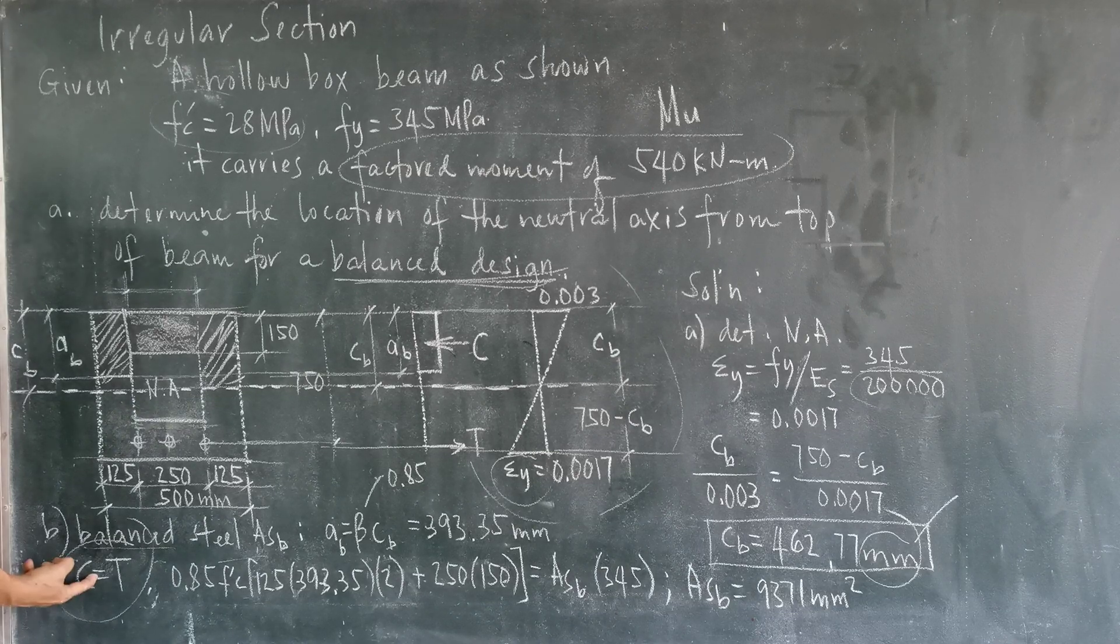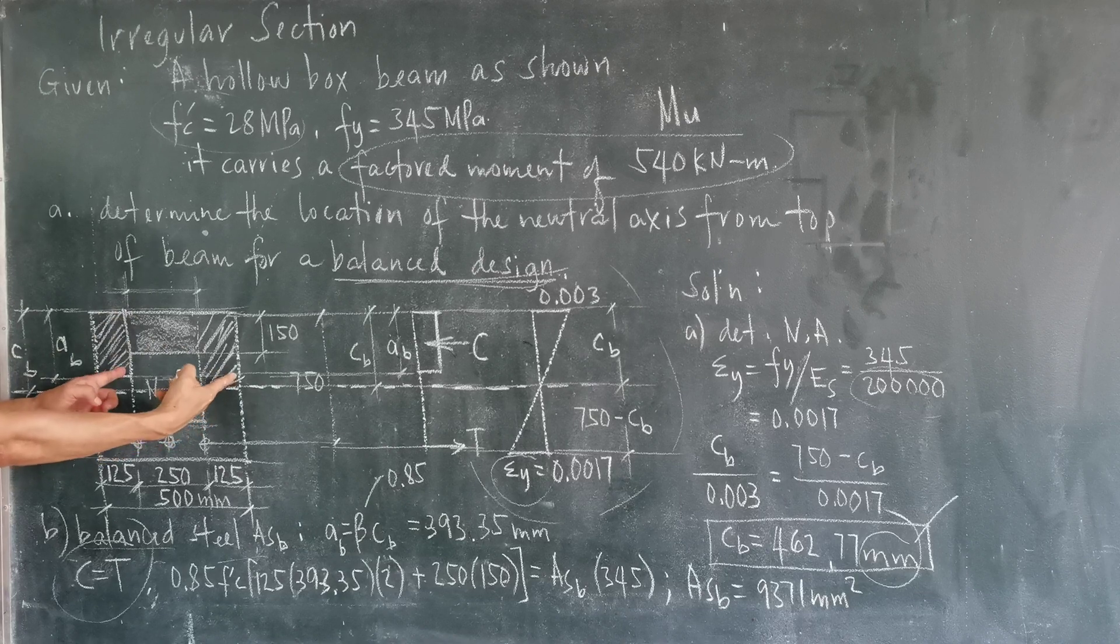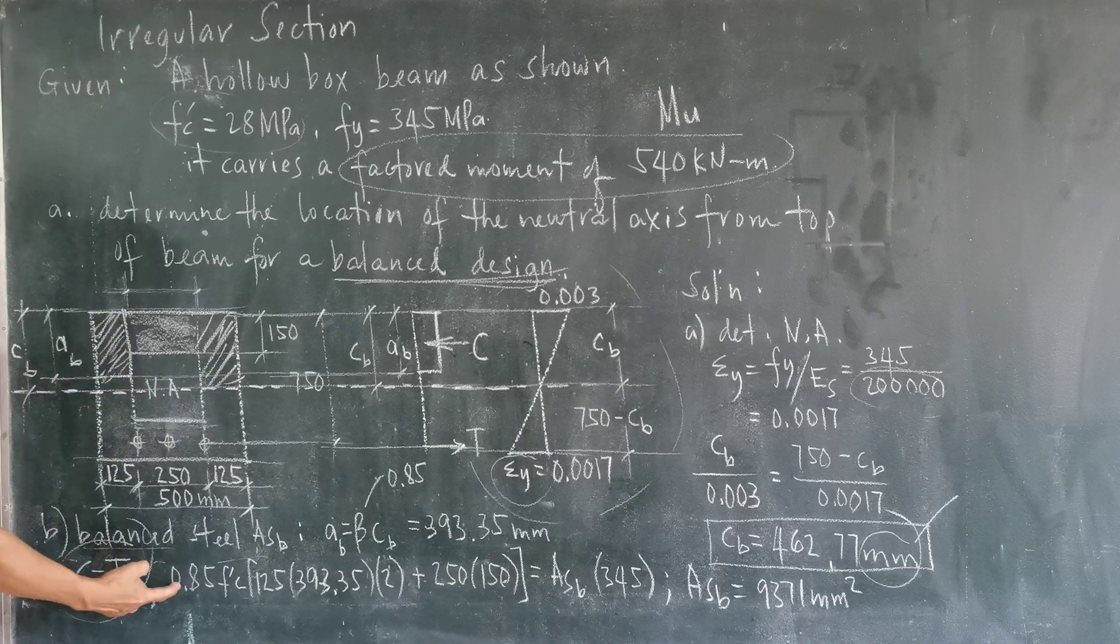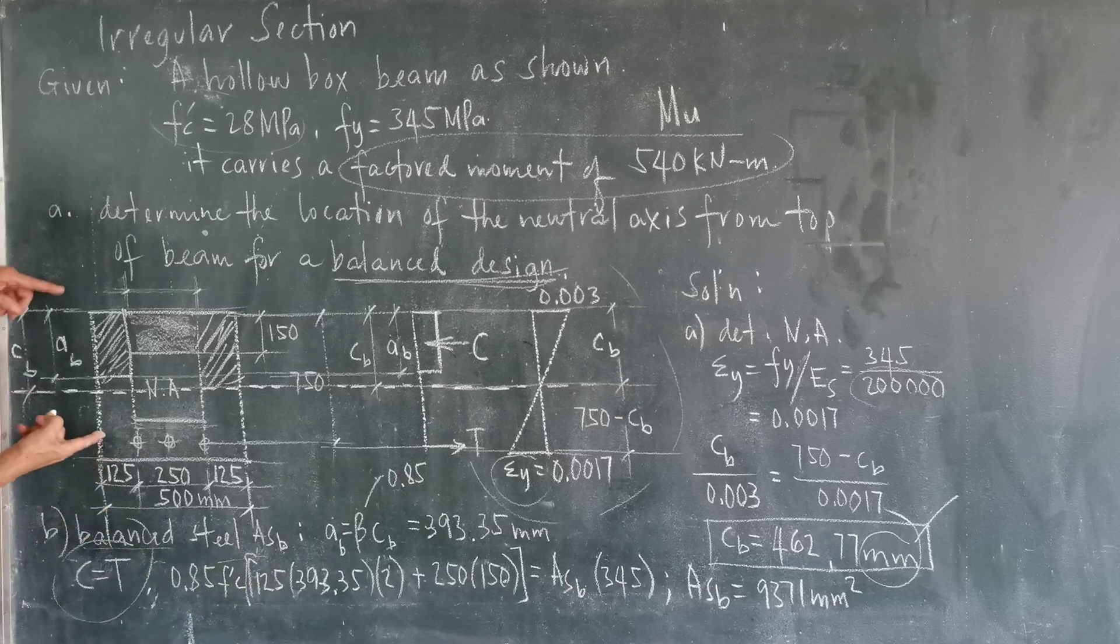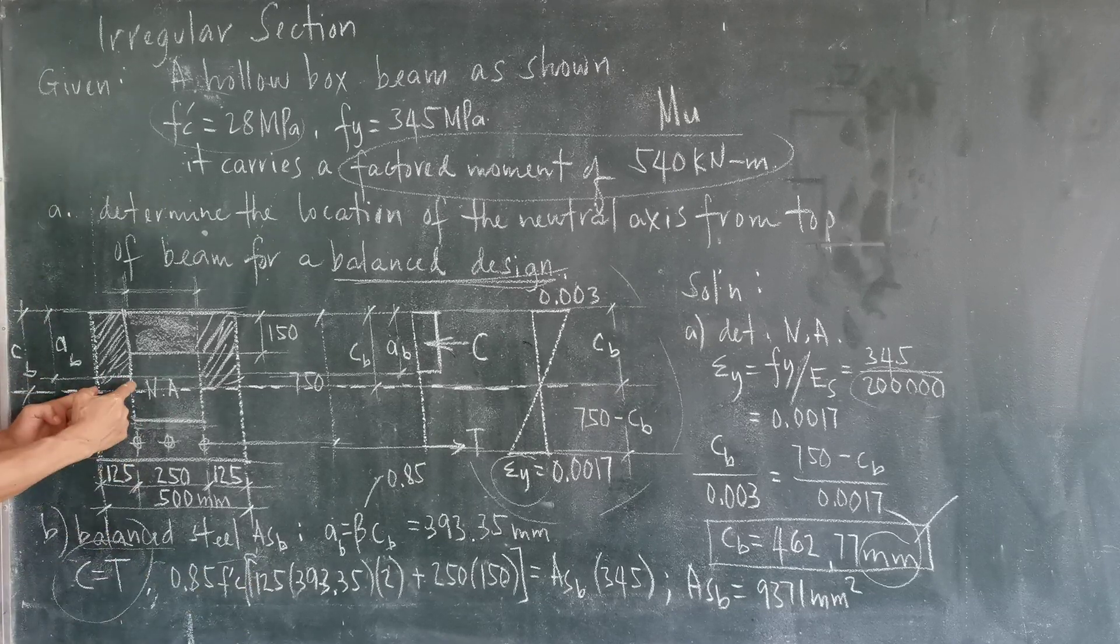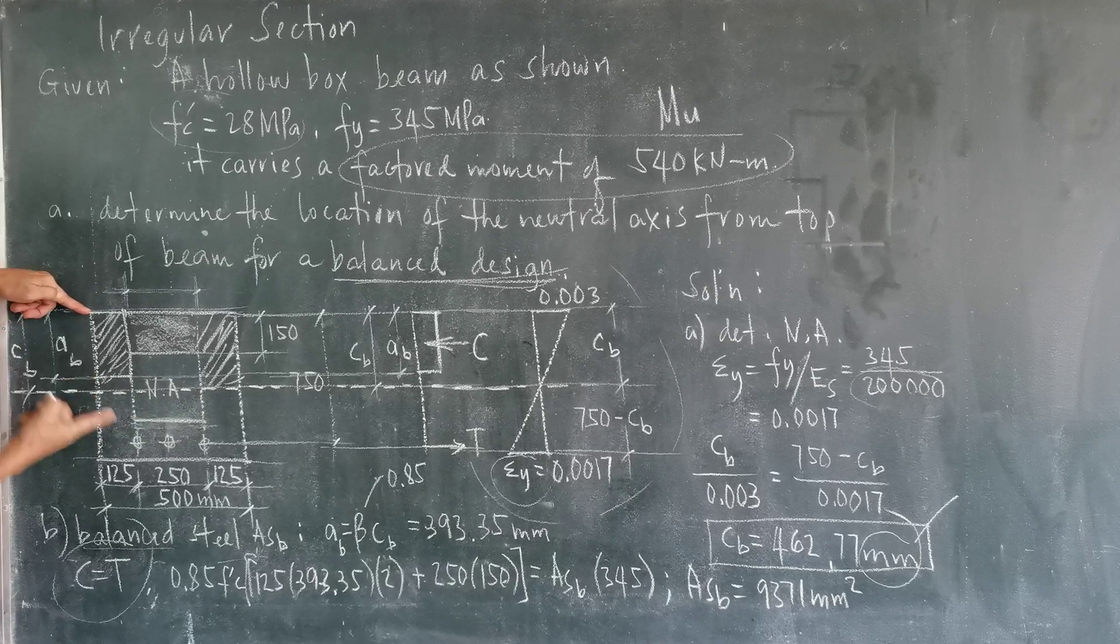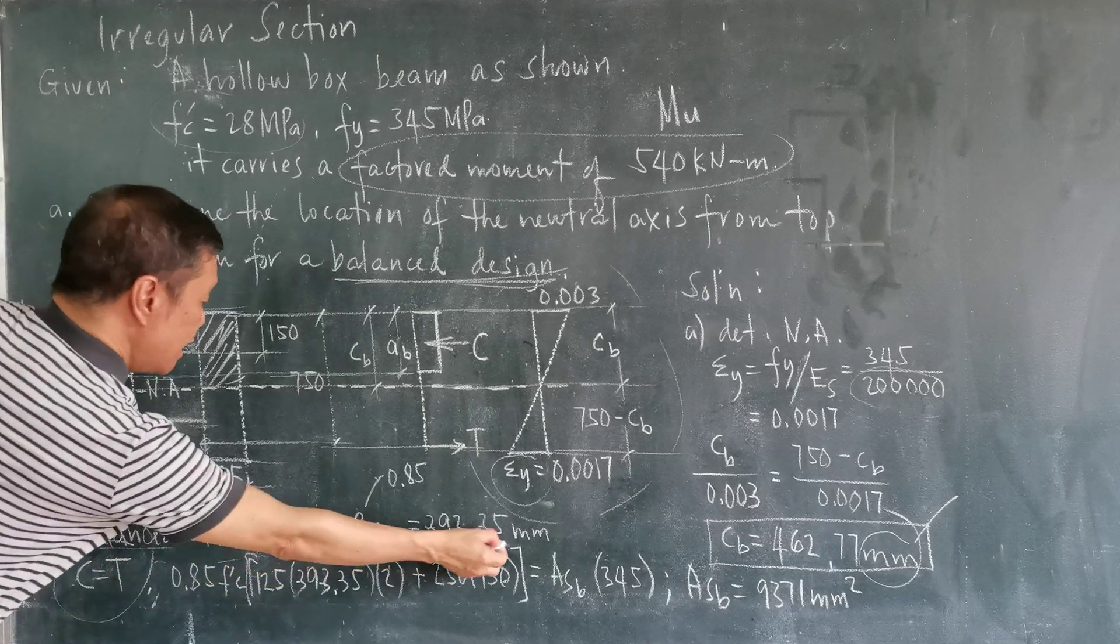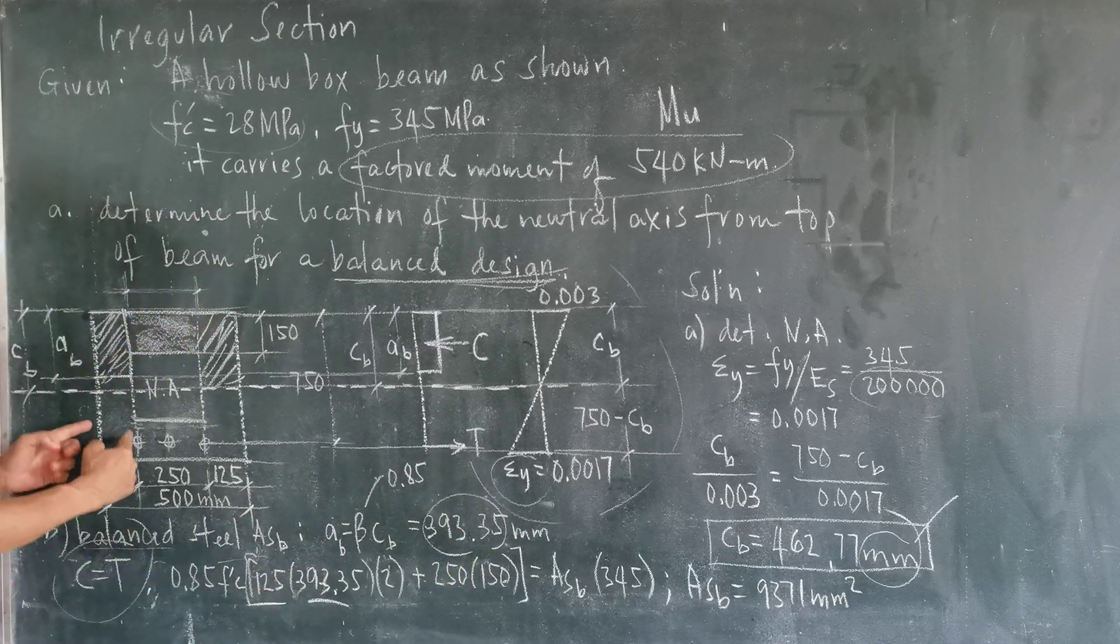So C is now equal to, considering these shaded areas on both sides, 0.85 F prime C times 125 times A sub B. Our A sub B here is 393, so this is now 125.